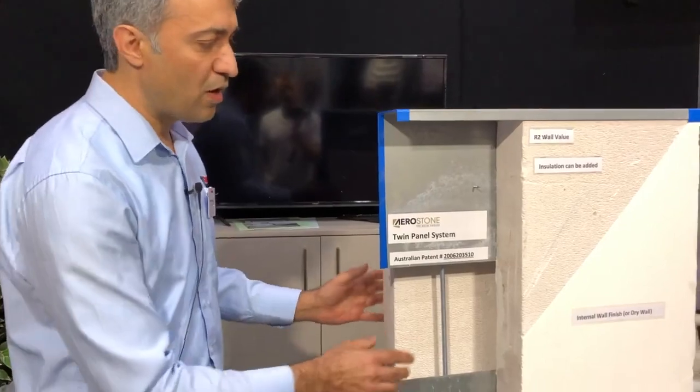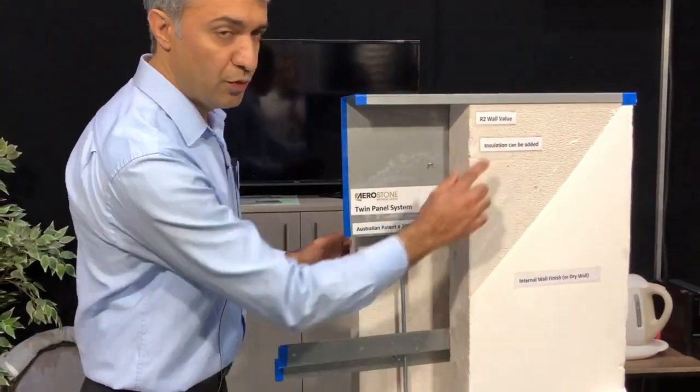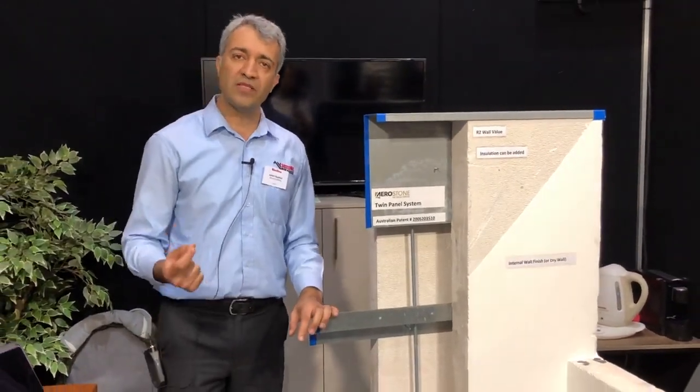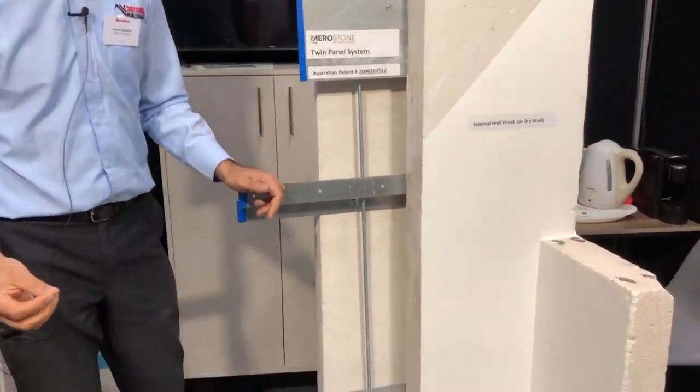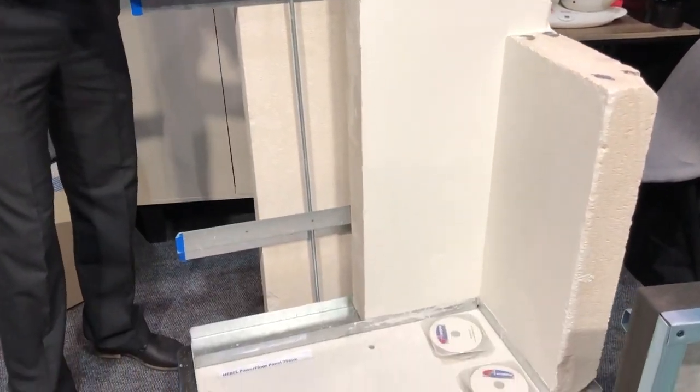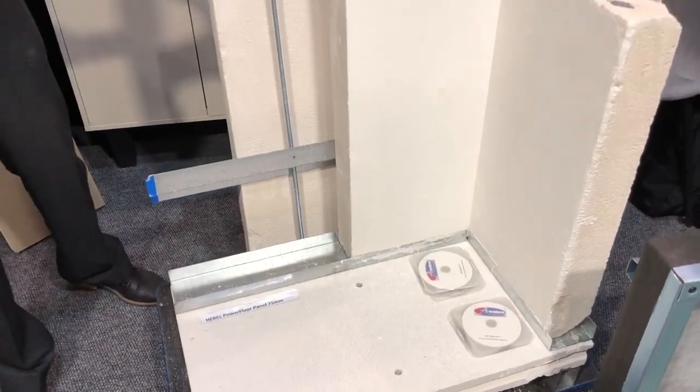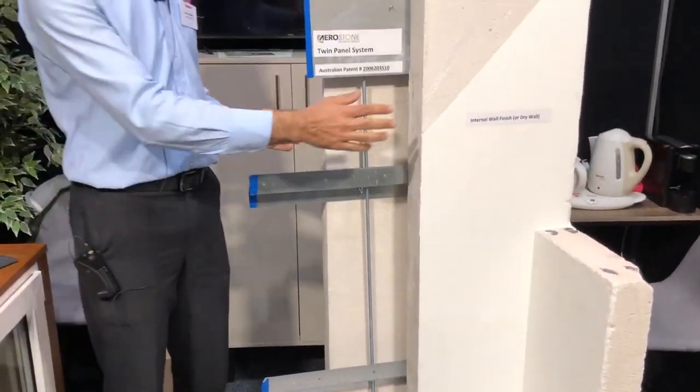The R-value on this system is R2. The R-value on a normal masonry system with double brick is 0.68. By adding insulation to the cavity on this system, you can increase this R-value up to R2.